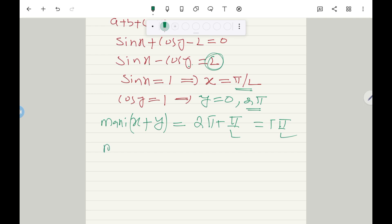Now minimum, minimum of x - y. To find minimum of x - y, your y should be maximum, x should be minimum. Okay, so that's why minimum value of x is here π/2 only, only one value, minus maximum value of y among 0 and 2π, 2π is maximum.